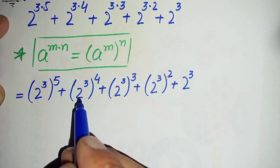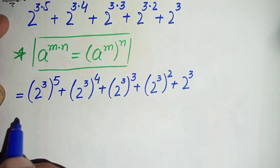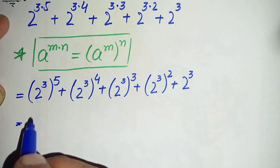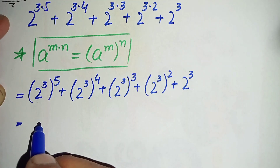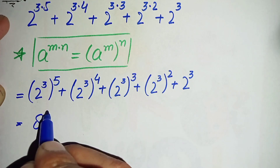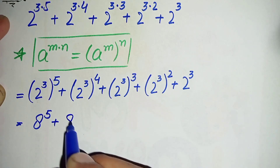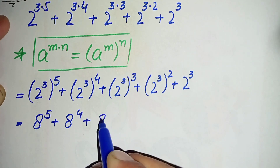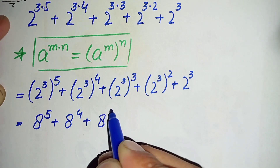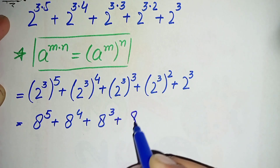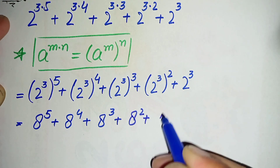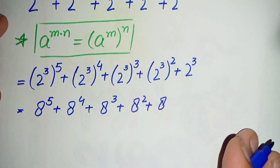Now we change 2 raised to power 3 to its value, which is 8, because multiplying 2 three times gives 8. So it becomes: 8 raised to power 5, plus 8 raised to power 4, plus 8 raised to power 3, plus 8 raised to power 2, plus 8.